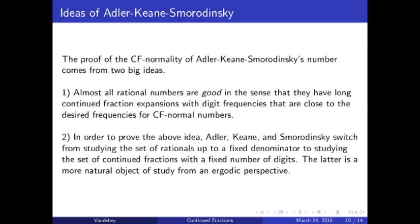Proving that this construction really does yield a CF normal number requires two big ideas. The first big idea is to show that almost all rational numbers are good in the sense that they have very long continued fraction expansions with digit frequencies that are close to the digit frequencies of a CF normal number. This is analogous to how if one picks a very large integer at random, one expects it to have about one tenth of its digits be sevens.